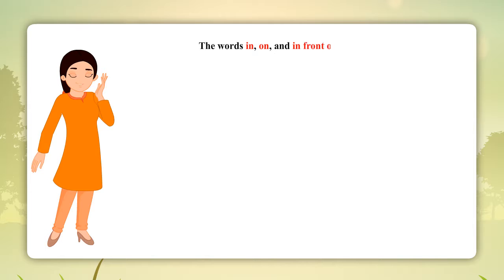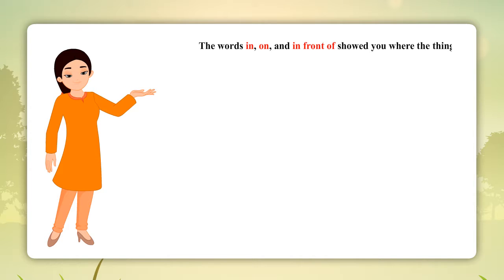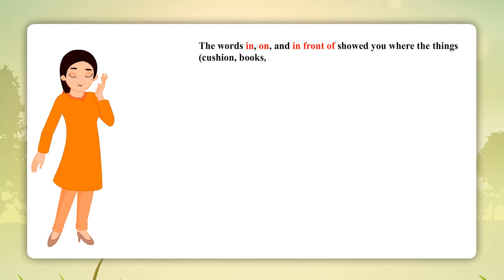The words in, on, and in front of showed you where the things - cushion, books, showpiece, and flowers - are. These words are prepositions.